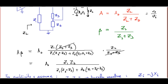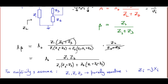For simplicity, and because it is the most common scenario in practical circuits, we assume all three impedances making up the tank circuit are purely reactive — either pure inductances or pure capacitances. So Zi = j·Xi where Xi is a real number: positive and proportional to omega for an inductance, negative and inversely proportional to omega for a capacitance.